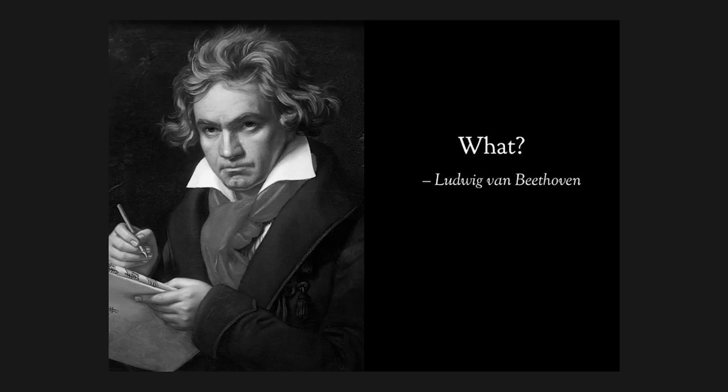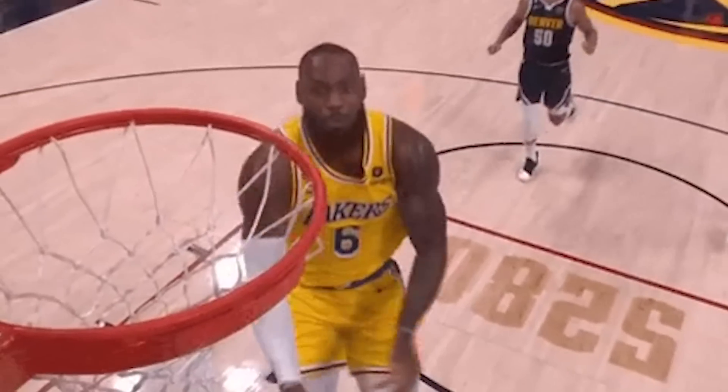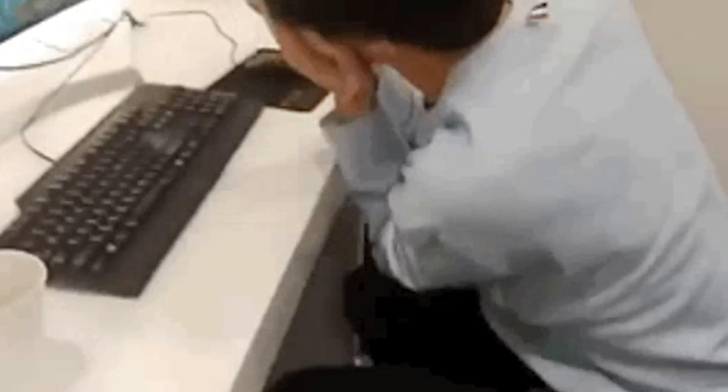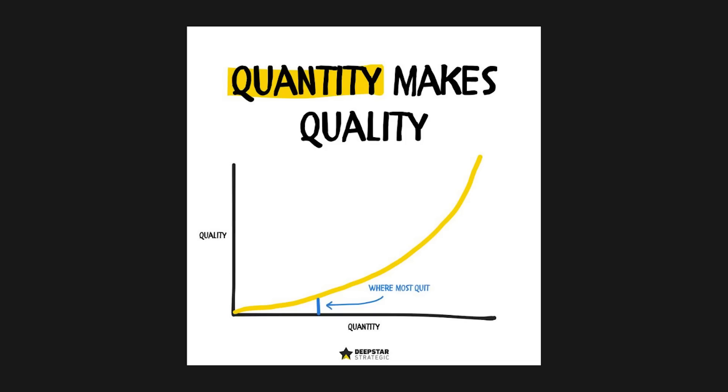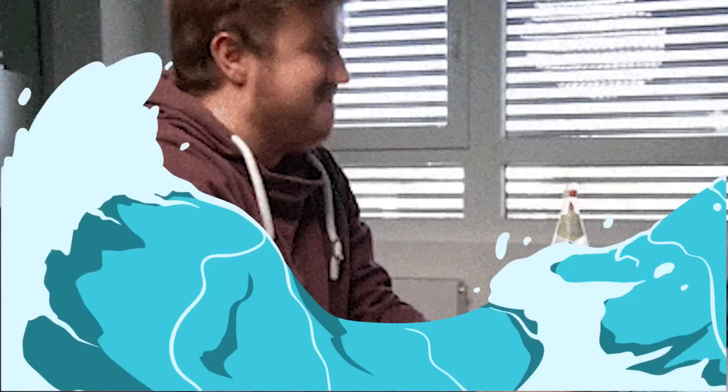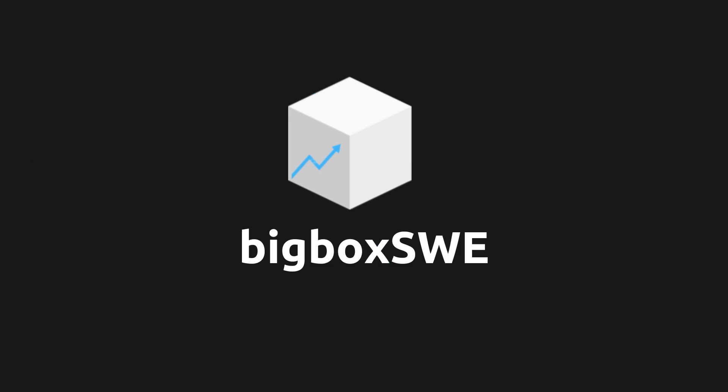Beethoven didn't write the perfect symphony in one try, LeBron didn't have the perfect dunk in one try, and you won't write the best code in one try. Quality comes from producing a large quantity of work. Minimize the overthinking, maximize the programming, and remember to have fun. Thank you for your time. I am BigBot.